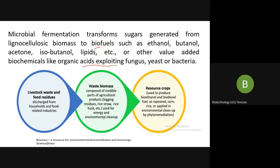This waste is used for energy and environmental cleanup. So whatever waste product — whether household waste or agricultural waste products — these can be consumed by your microorganisms so that they get sufficient nutrition to produce value-added materials. Resource crops used to produce bioethanol and biodiesel come from crop plants like rapeseed, corn, and rice, which are applied in environmental cleanup or biophytoremediation.